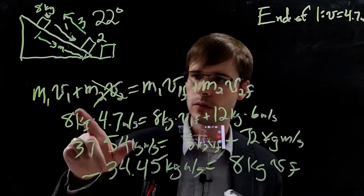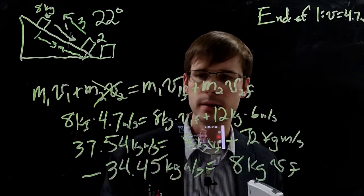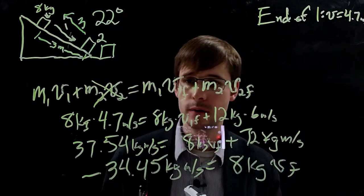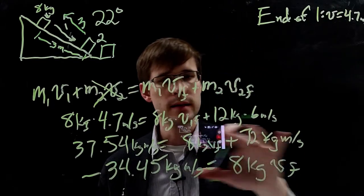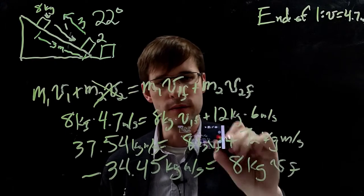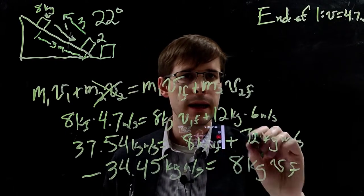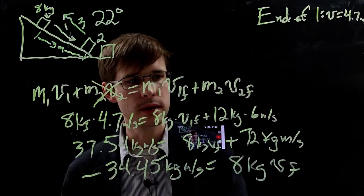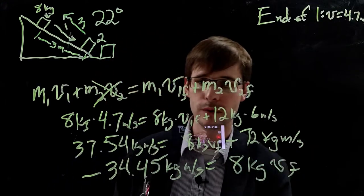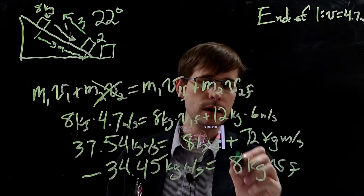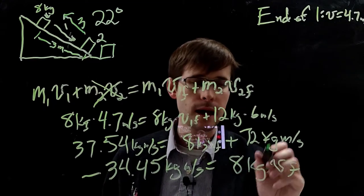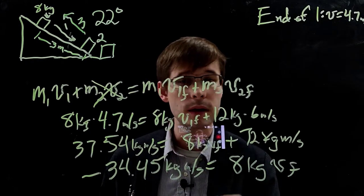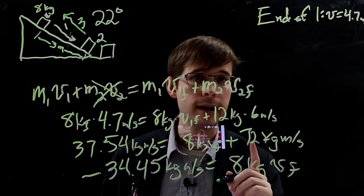All right, so if we go through, plug everything in, simplify a little bit here, we get the left-hand side 37.5 kilogram meters per second. On the right-hand side, we get these two terms with this one here being vf that we're looking for, plus this 72 kilogram meters per second. So we bring this over to the other side, we get negative 34.45 kilogram meters per second, which is equal to 8 kilograms times the final velocity. So our final velocity is going to be this 34.45 kilogram meters per second divided by 8 kilograms.